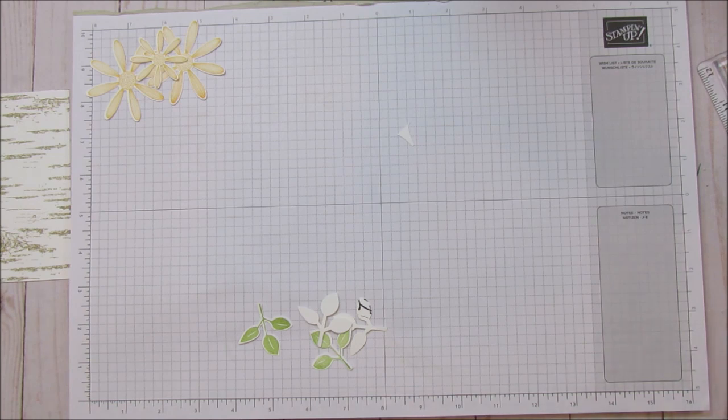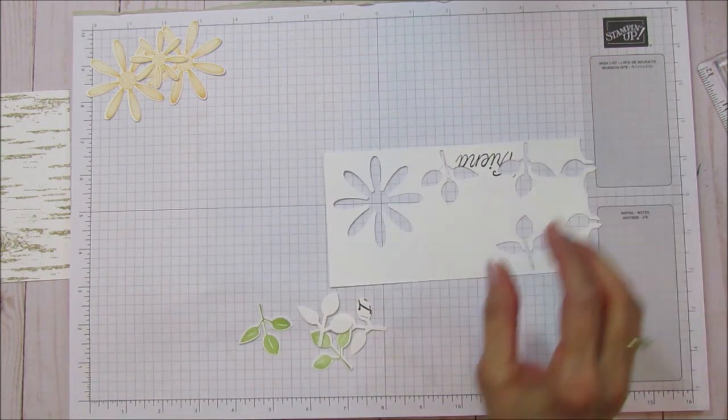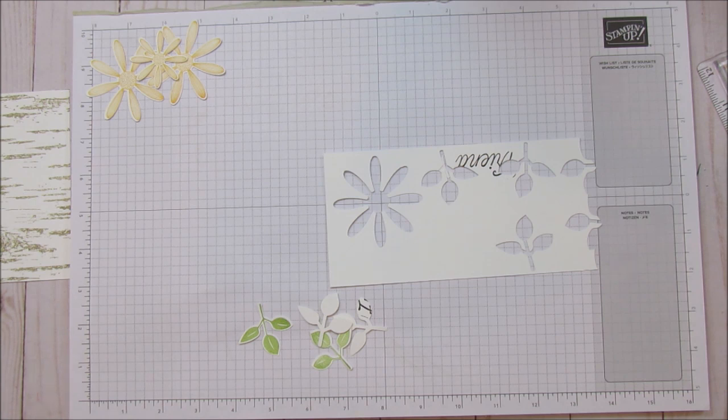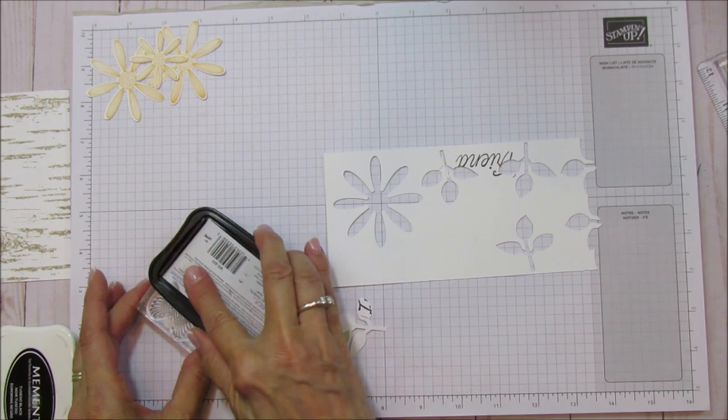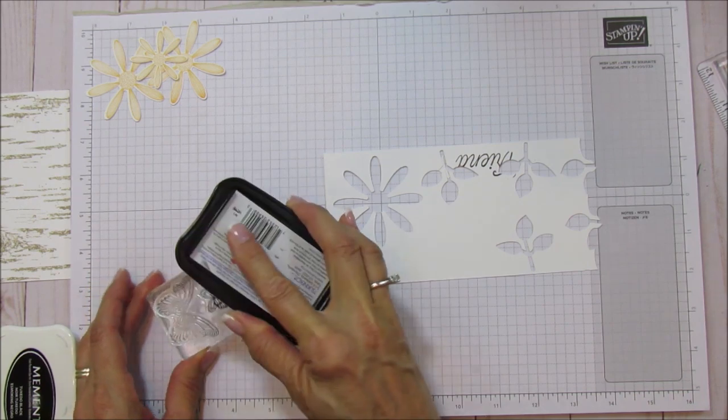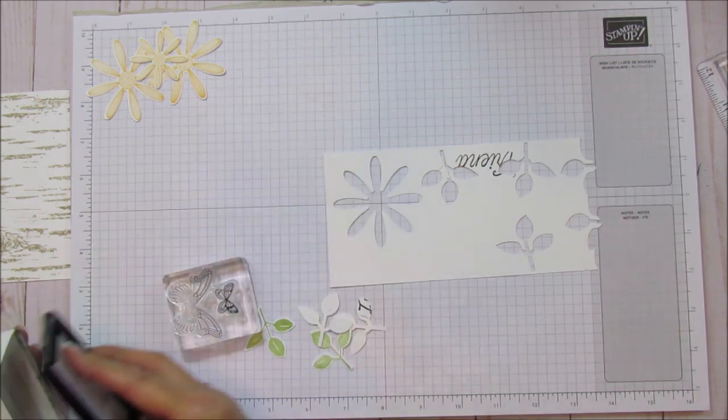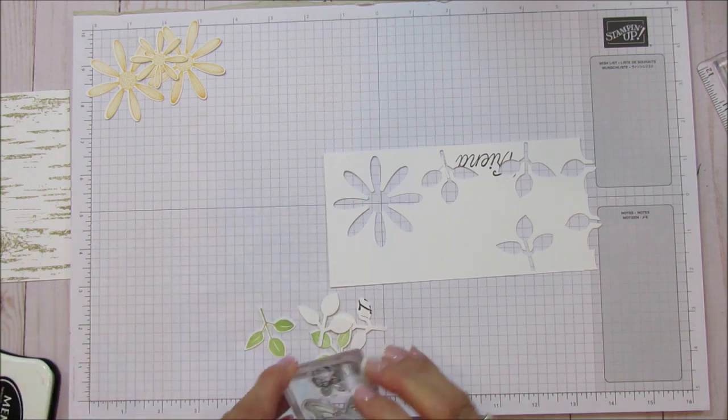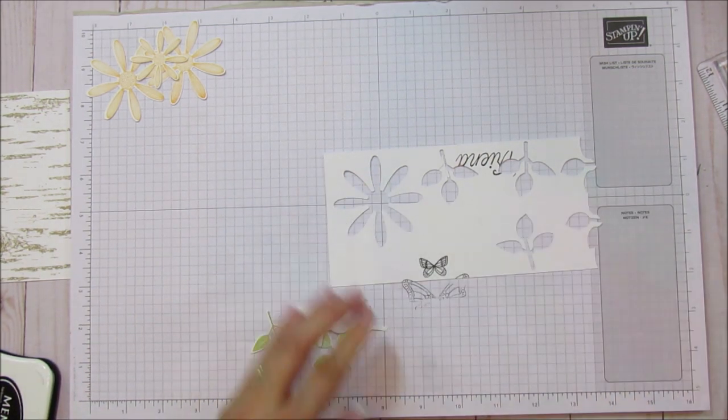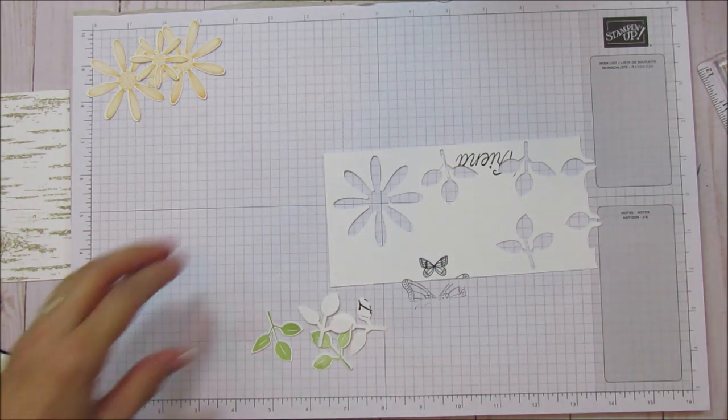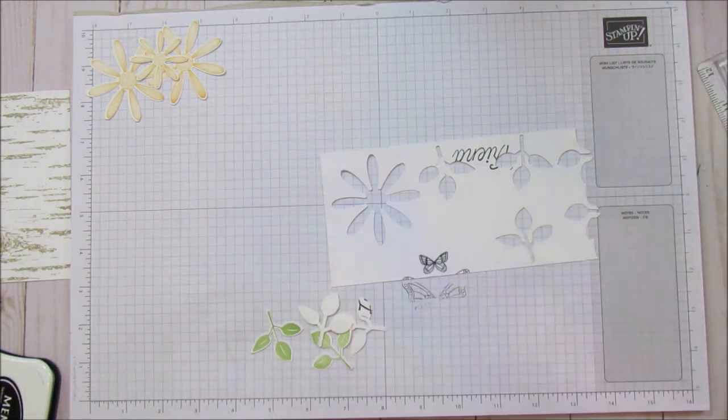Now all we need to do is our butterfly. I'm going to use the same piece while I have it out. We're going to do it with memento black. We're just inking up the little one because that's all we need. And then we'll just go ahead and stamp our friend. And we will be all ready to put it all together.